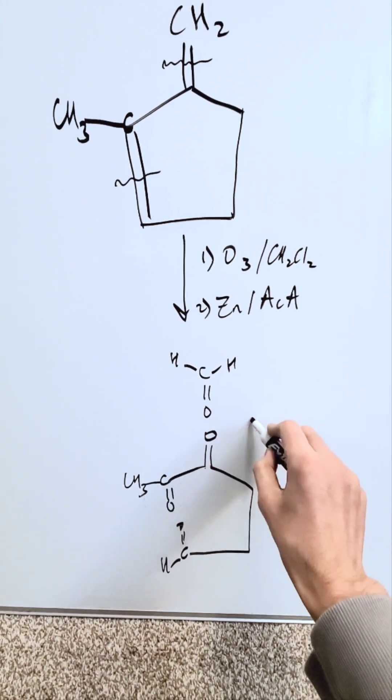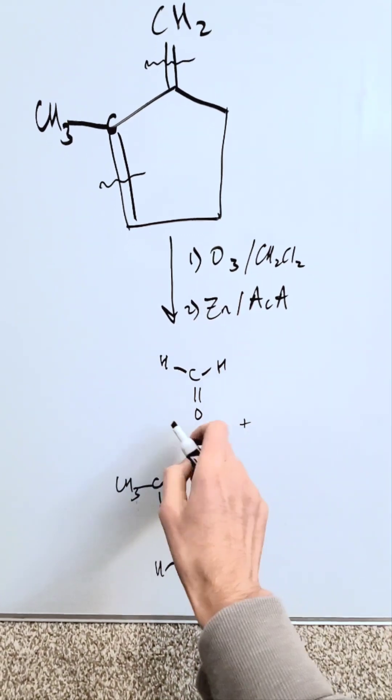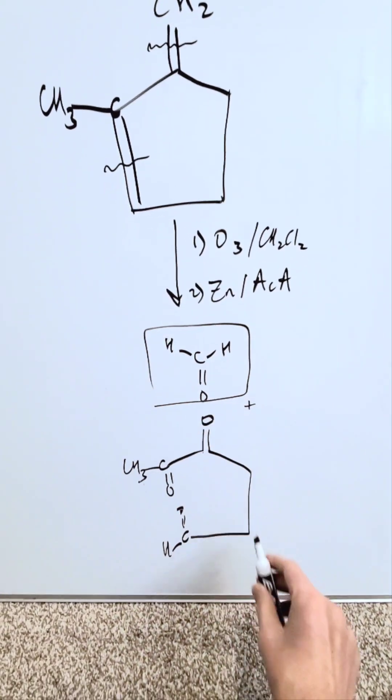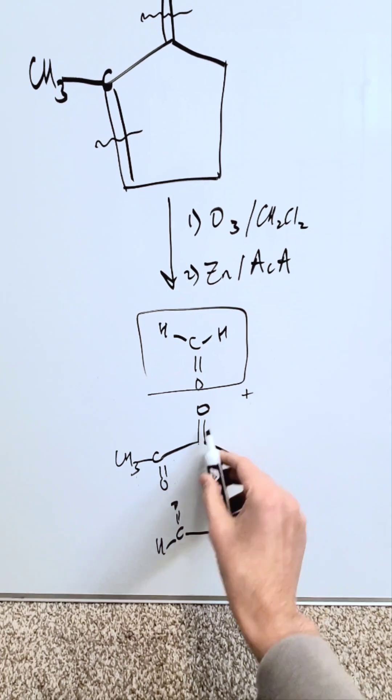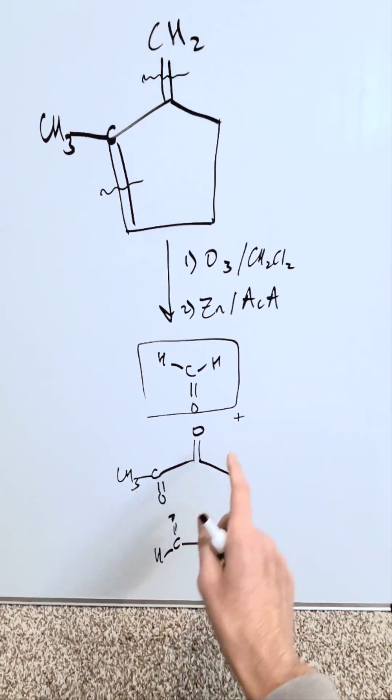I've generated here as my end results of this oxidative cleavage using ozone: this item right here formaldehyde, then I have this. I have a ketone here, a ketone here, and aldehyde here, and you're looking at it.